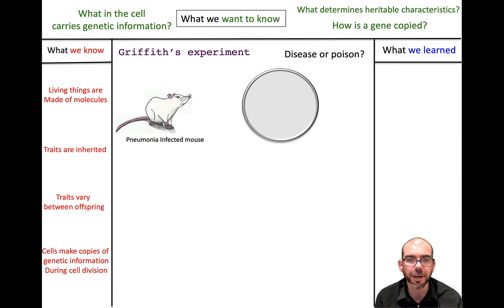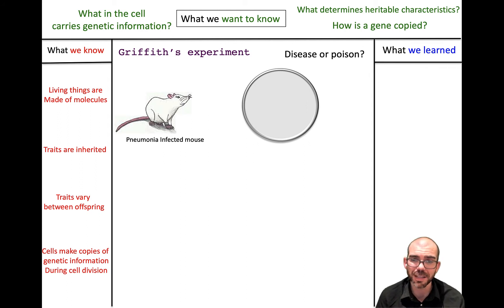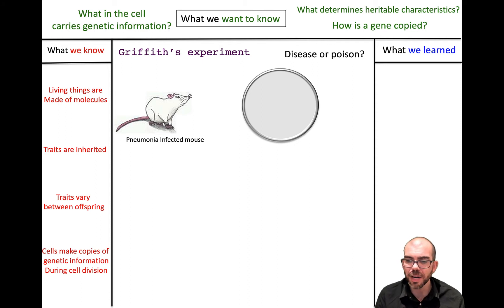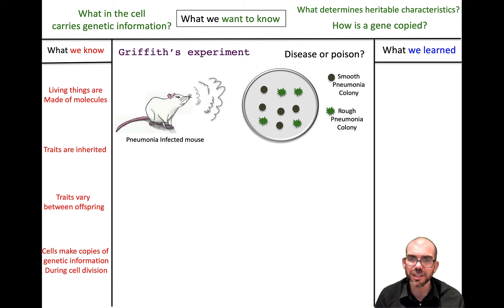The first one was Griffith's experiment. Griffith had rats and noticed that they would get infected with pneumonia and die. He wanted to know: was it the disease itself that made them perish, or was pneumonia producing some kind of poison or toxin causing them to get sick and die? To answer this, he took a sample from his sick mice and observed two different bacterial colonies — some appeared smooth and others appeared rough.